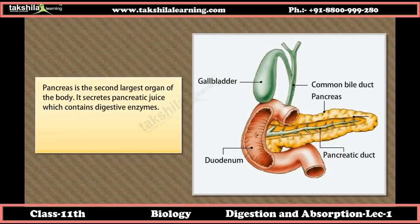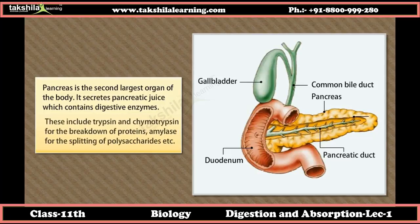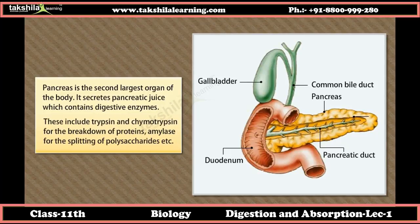The pancreas is the second largest organ of the body. It secretes pancreatic juice which contains digestive enzymes, including trypsin and chymotrypsin for the breakdown of proteins, and amylase for the splitting of polysaccharides.